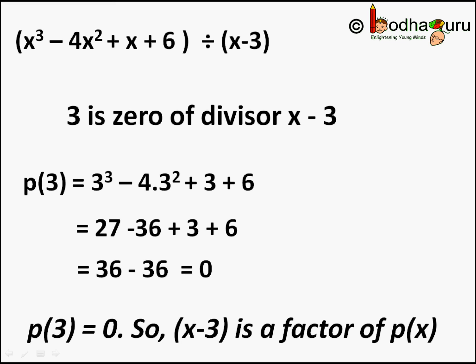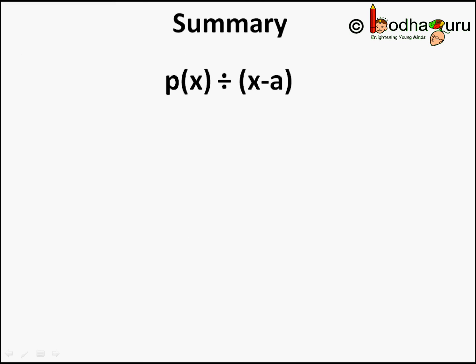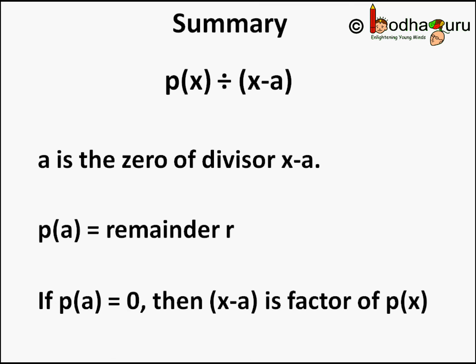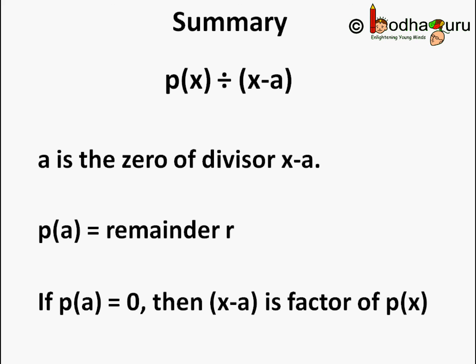In a nutshell: for p(x) of degree greater than or equal to 1, when divided by a linear polynomial (x − a) where a is a real number, then a is the zero of the divisor polynomial (x − a), and p(a) is the remainder r — this is the Remainder Theorem. And if p(a) comes out to be 0, then (x − a) is a factor of p(x) — and that is the Factor Theorem. That is all about polynomials for now. Bye-bye.